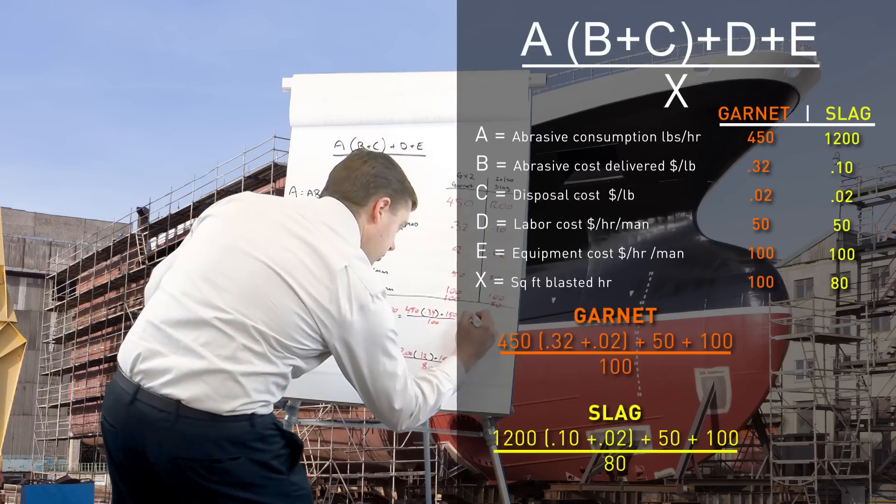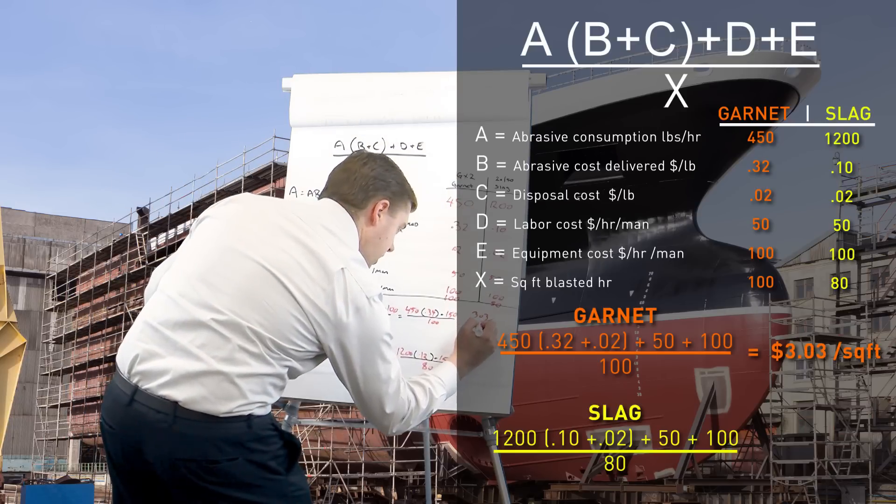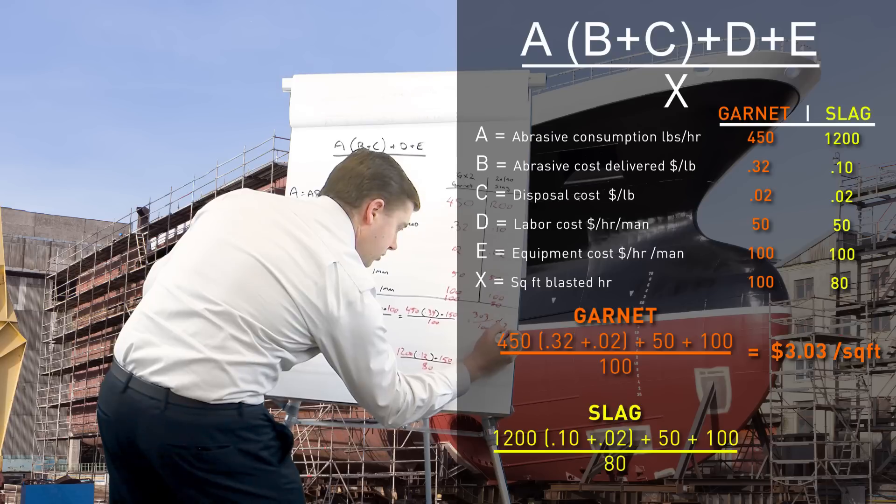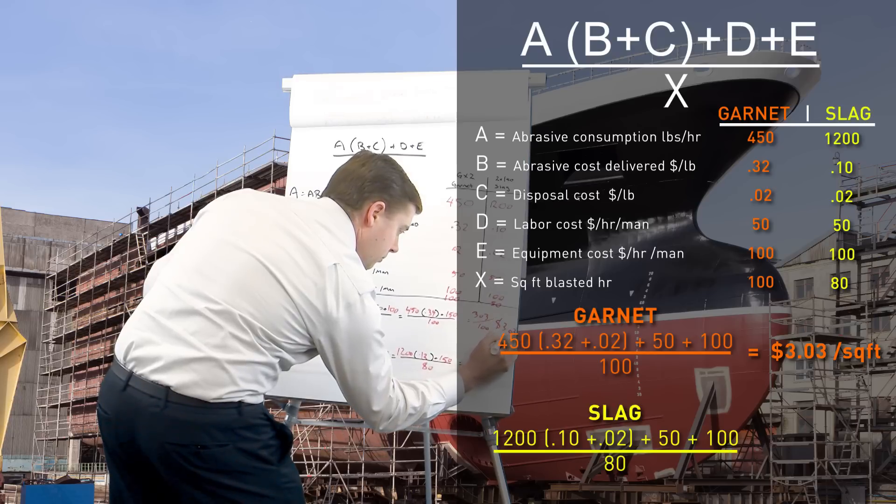We're going to get, here we have 303 over 100 and that gives us $3.03 per square foot.